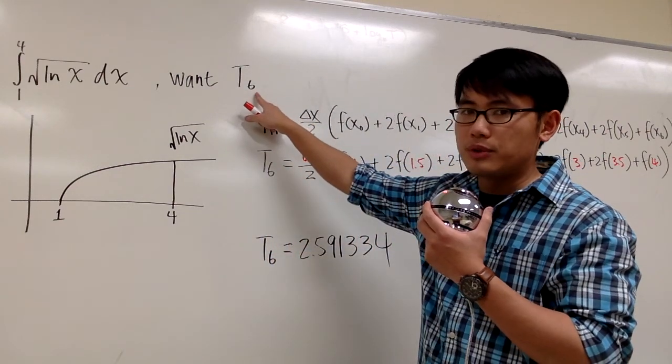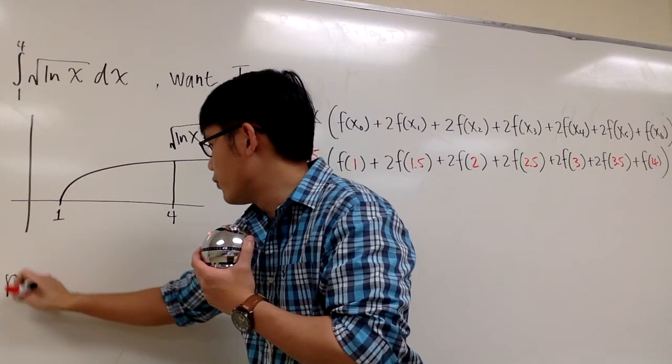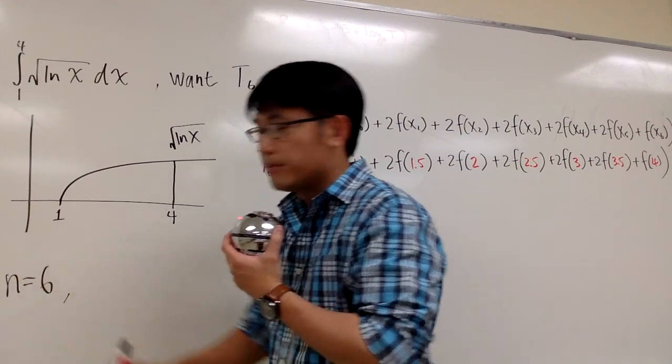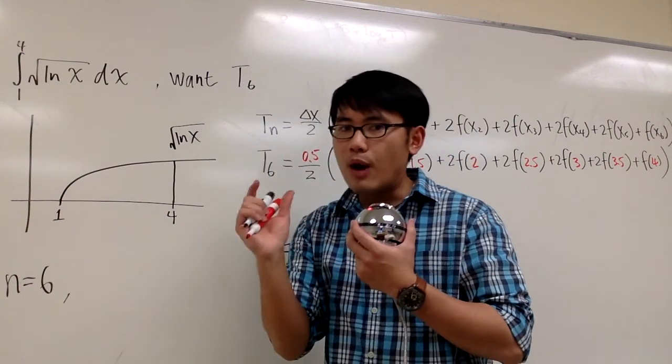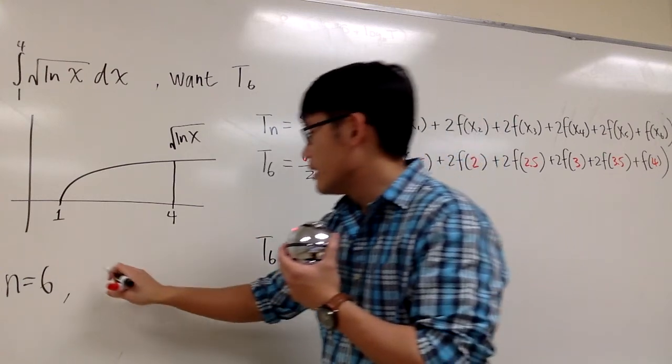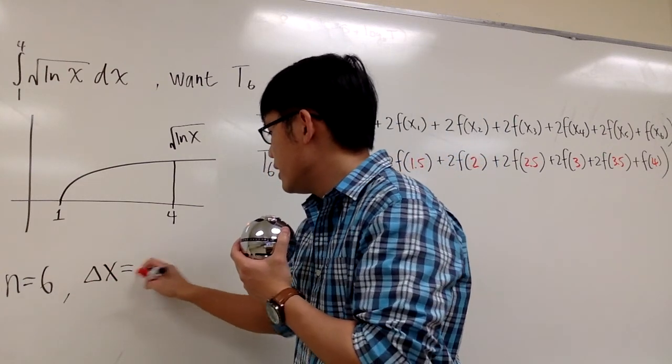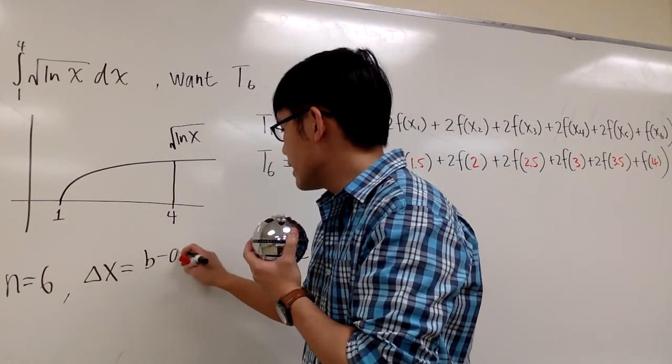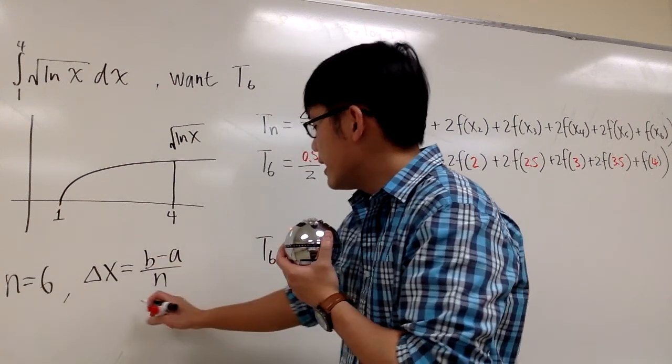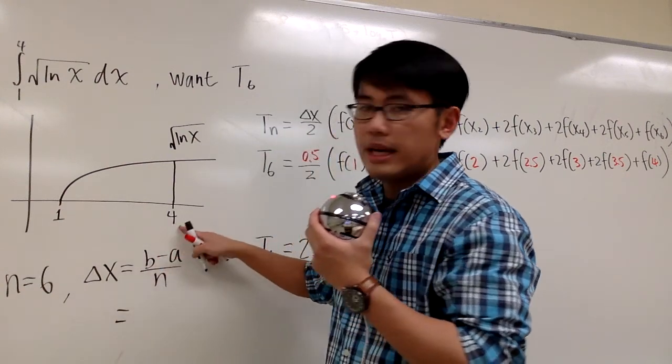Well, we want to use six trapezoids. That means from the formula, n will be 6. But then we also have to figure out how wide each trapezoid is, and that's the delta x business. And we can use the formula b minus a over n, and then the b is the endpoint right here, which is 4.